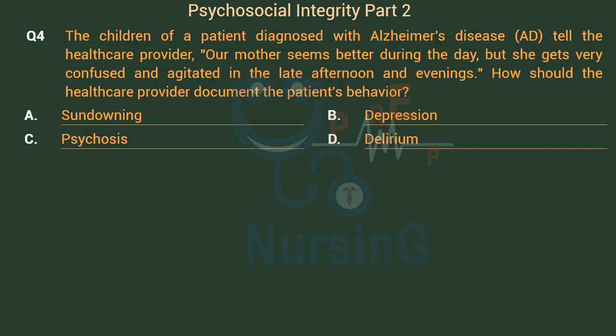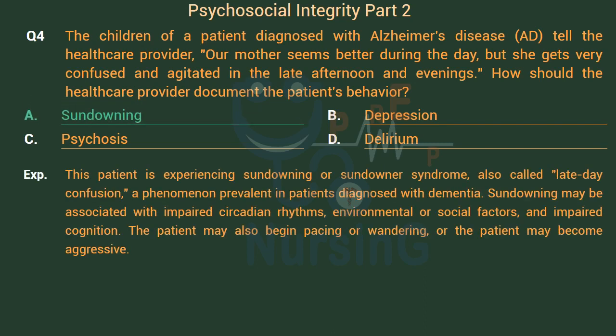The right answer is Option A: Sundowning. This patient is experiencing sundowning, or sundowner syndrome, also called late-day confusion — a phenomenon prevalent in patients diagnosed with dementia. Sundowning may be associated with impaired circadian rhythms. The patient may also begin pacing or wandering, or may become aggressive.